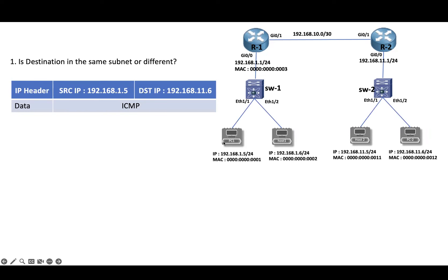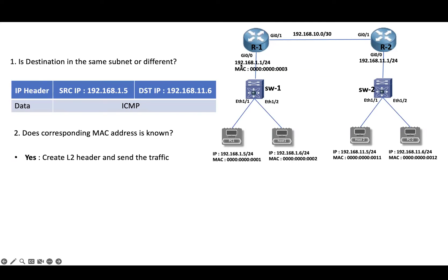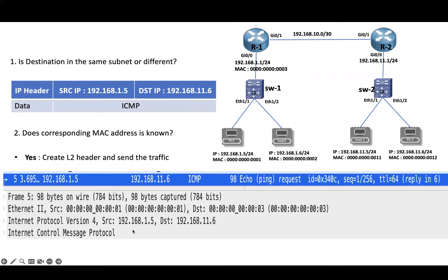PC1 will check its ARP table to find out the MAC address of the default gateway. If PC1 knows the MAC address of the default gateway, it will send the data towards R1. In the capture: source IP is PC1's IP, destination IP is PC2's IP, source MAC is PC1's MAC, and destination MAC is the default gateway's MAC.